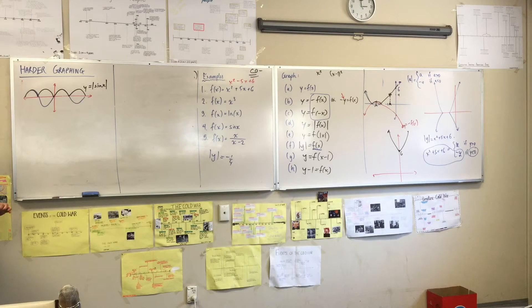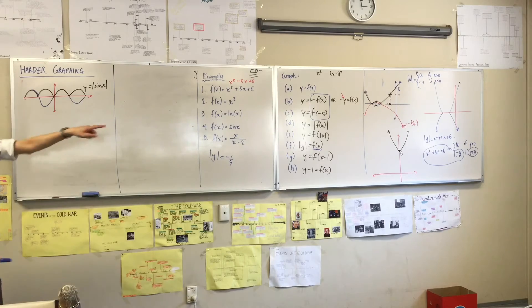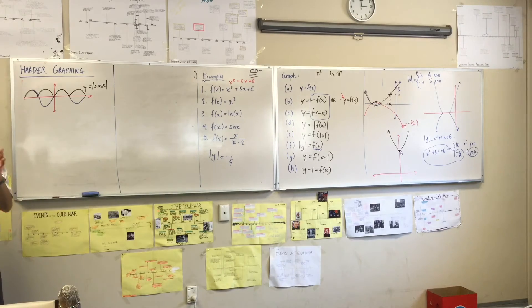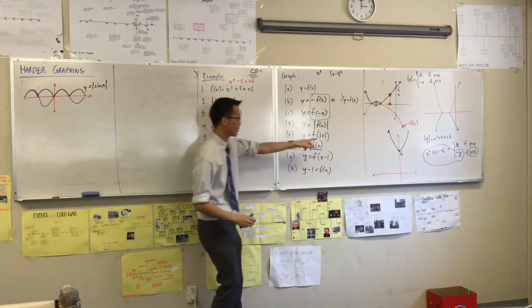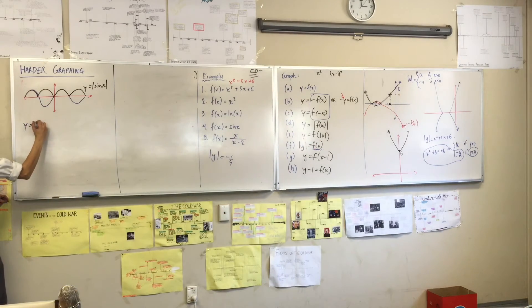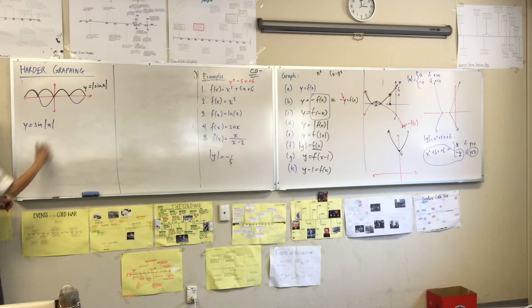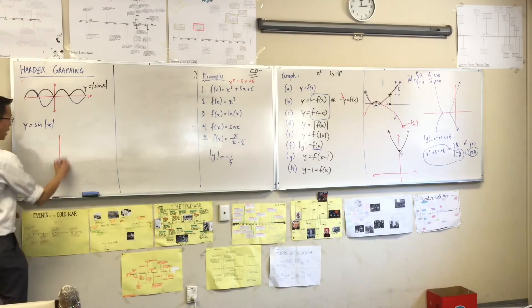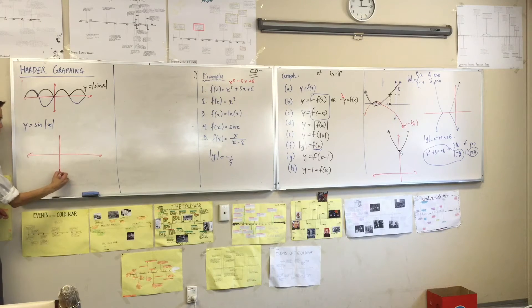Okay, now it starts to get a little more interesting. Let's have a look at the next one. When you apply an absolute value just to the x, so this guy. What's it going to look like? Think about what happened when we did this with our parabola over there.